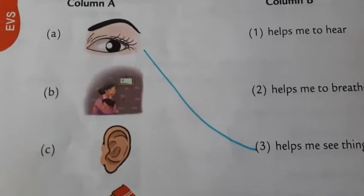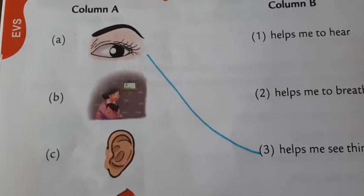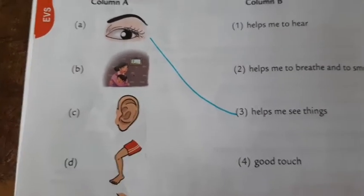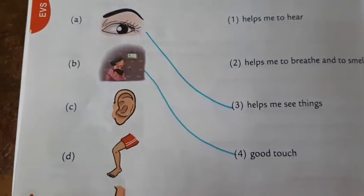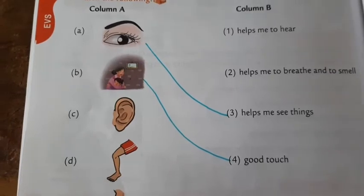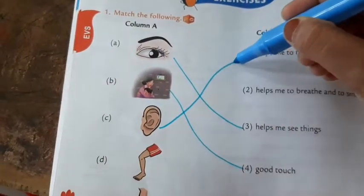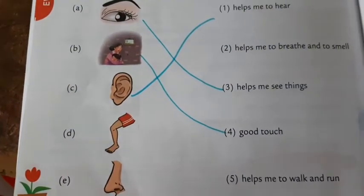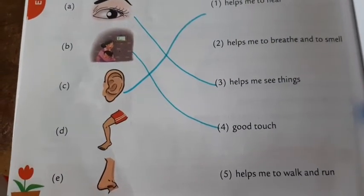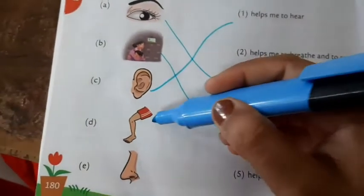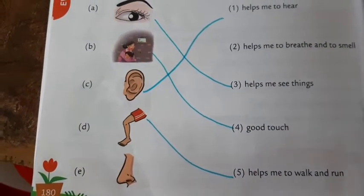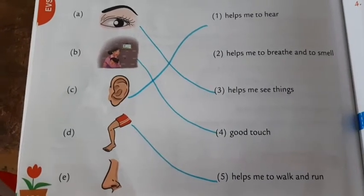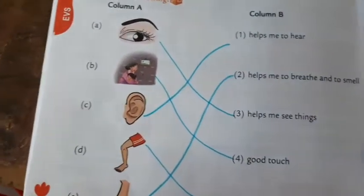Next picture is Grandmother - she helps with good touch. Next picture is Ears - they help me to hear. Next picture is Leg - it helps me to walk and run.